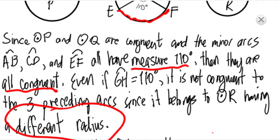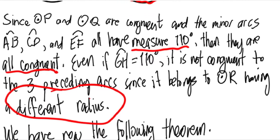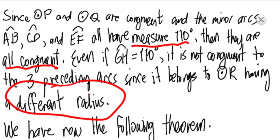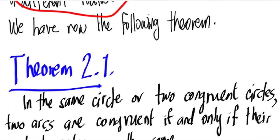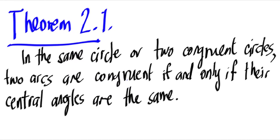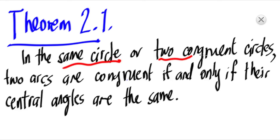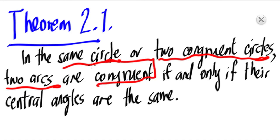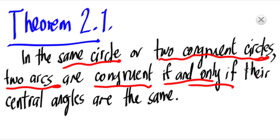For arcs to be congruent, the circles must be congruent and the measures must be the same — those are the two conditions. From that example, we now present Theorem 2.1, which talks about the congruence of arcs. In the same circle or in two congruent circles, two arcs are said to be congruent if and only if their central angles are the same.